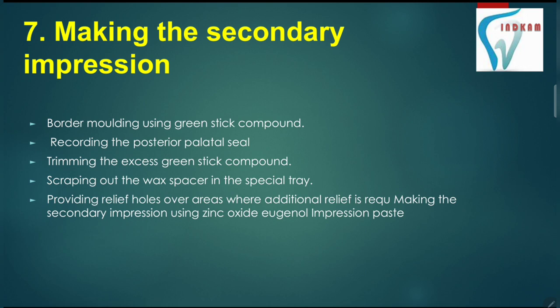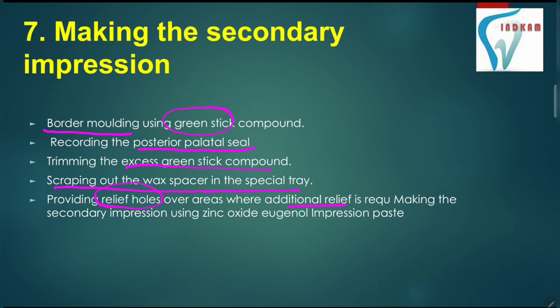After making the primary cast, we will make the secondary impression. For the secondary impression, we will be doing border molding using green stick compound, and then record the posterior palatal seal. The excess green stick compound is trimmed. Scraping out of the wax in the special tray is done, and relief holes are provided over areas where additional relief is required.